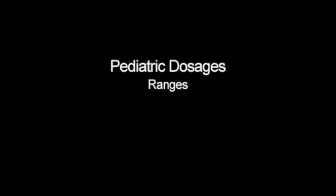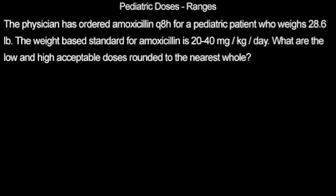Often when calculating a pediatric dose of medication, there will be a range used, with acceptable high and low doses. The physician has ordered amoxicillin every 8 hours for a pediatric patient who weighs 28.6 pounds. The weight-based standard for amoxicillin is 20 to 40 milligrams per kilogram per day. What are the low and high acceptable doses, rounded to the nearest whole?